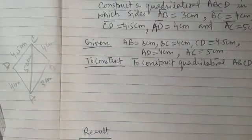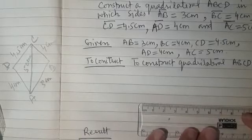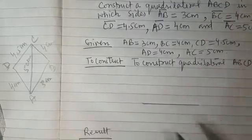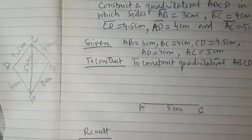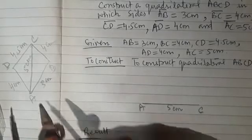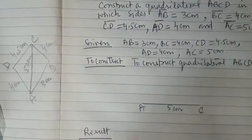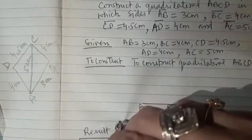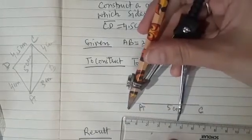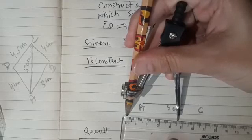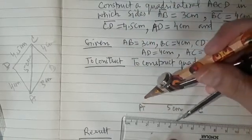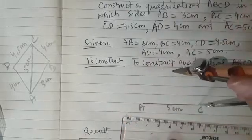We can see that if we draw AC first, then we can easily reach point D and point B because the dimensions of the sides are given. So the first step is to draw AC = 5 cm. I am going to draw the diagonal first — that is AC, which is 5 cm. This is A and this is C, and this is 5 cm. After that, since CD is 4.5 cm, I will take the radius as 4.5 cm, put the needle of the compass at point C, and draw an arc.